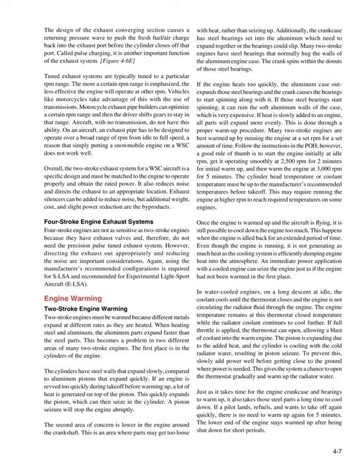Many two-stroke engines are best warmed up by running the engine at a set RPM for a set amount of time. A good rule of thumb is to start the engine initially at idle RPM, get it operating smoothly at 2,500 RPM for two minutes for initial warm-up, and then warm the engine at 3,000 RPM for five minutes. The cylinder head temperature or coolant temperature must be up to the manufacturer's recommended temperatures before takeoff. Once the engine is warmed up and the aircraft is flying, it is still possible to cool down the engine too much if the engine is idled back for an extended period.